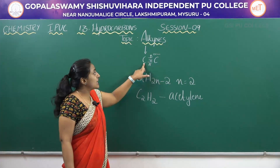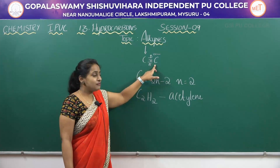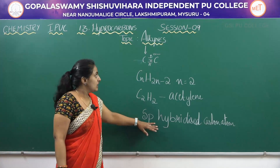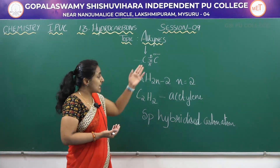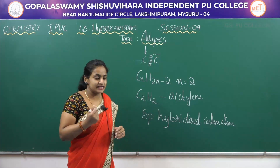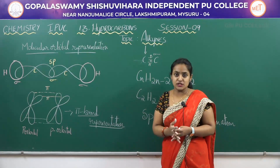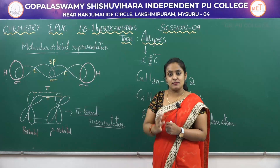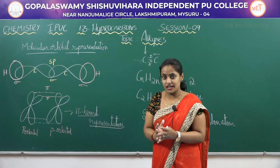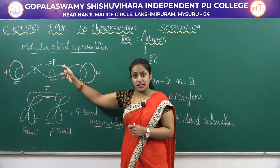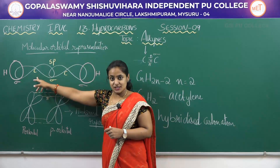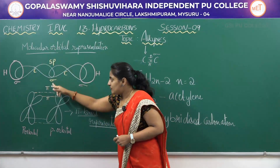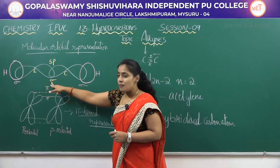In alkynes, the triple-bonded carbon atom is SP hybridized. Let us observe how the sigma bond and the pi bonds are formed in alkynes. The carbon atom is SP hybridized. The SP hybridized molecular orbital of one carbon atom overlaps with the SP hybridized orbital of another carbon atom to form a sigma bond.